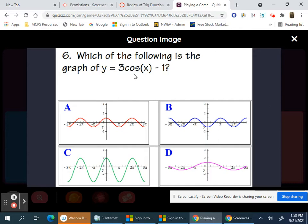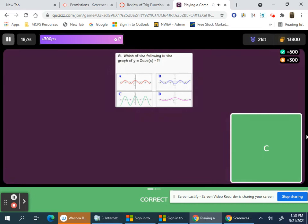This one, 3 cosine x minus 1. The center line is negative 1, so this is the only one that has a center line of negative 1, letter C.